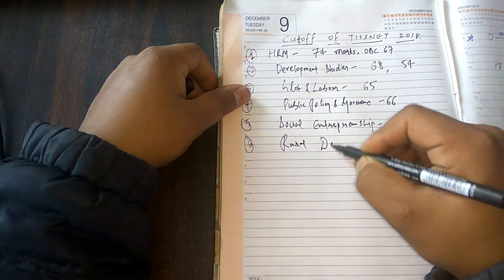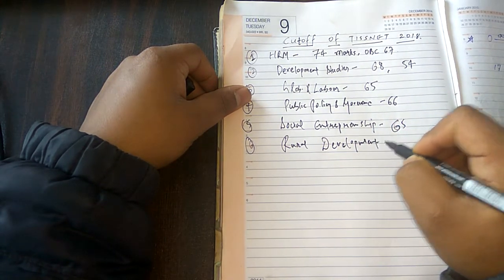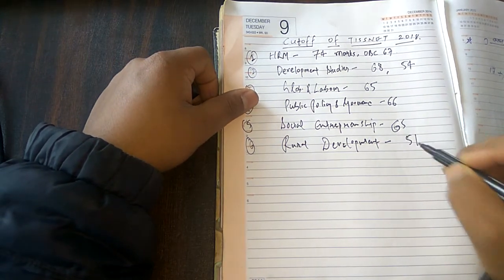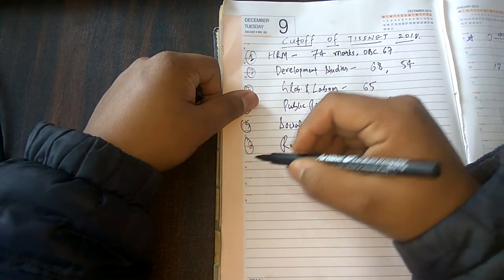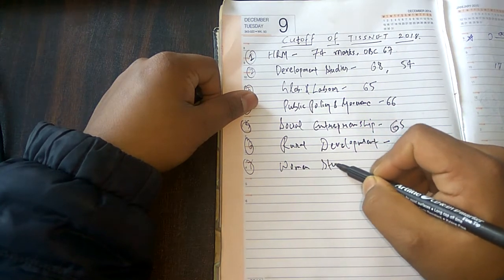The Government of India is supporting and emphasizing TISS to make further developments in this course, and 51 marks for the general category. The seventh one, which I am very close to, I was selected in this course in previous times.